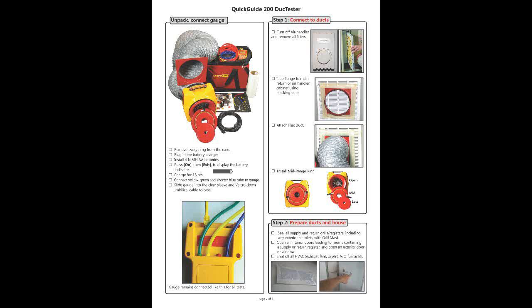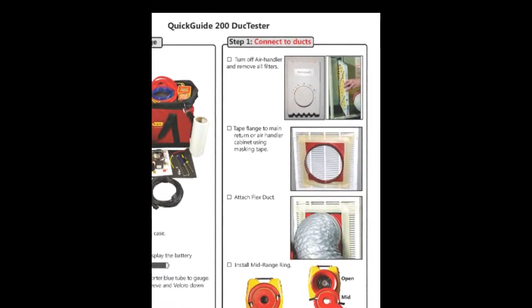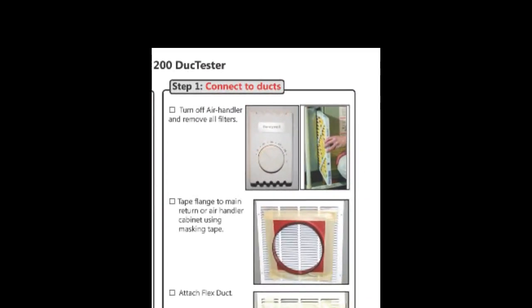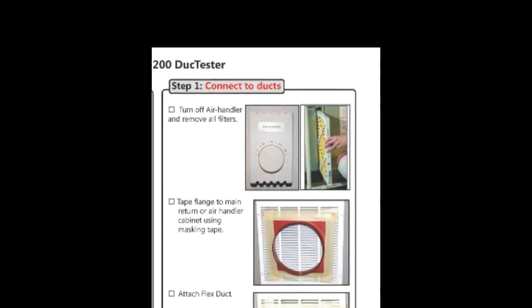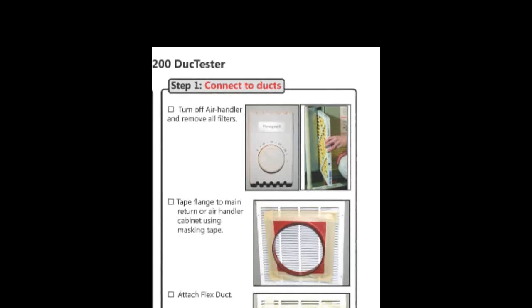Connect to the ducts. The first thing that we need to do before doing a duct test is to make sure that the air handler is off and will not come on during our test.